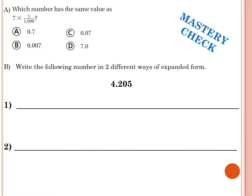Here's your mastery check. Answer the two following questions. For part B, write the number in two different ways in expanded form: first write it using decimals, and second write it using fractions. Pause the video while you work on the mastery check — the answers will follow. Pause now and when you are done hit play to check your work.